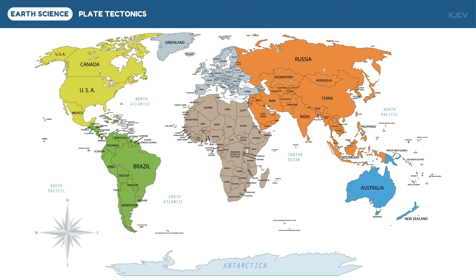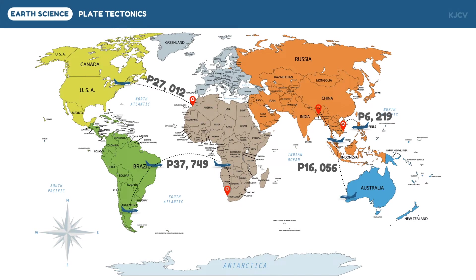Have you ever wondered why plane tickets are very expensive? For example, a non-promo fare from the Philippines going to Vietnam may cost 6,219 pesos. From New York to Morocco, a non-promo fare may cost 27,012 pesos. A flight from Perth, Australia going to Bangladesh may cost 60,056 pesos and would require a connecting flight in Kuala Lumpur, Malaysia. A flight from Buenos Aires, Argentina going to Cape Town in South Africa may cost 37,749 pesos and would require connecting flights in Brazil and Angola. Aside from fuel charges, taxes, and other air transportation fees, one major reason why flights are expensive is because of the distance caused by the big bodies of water.